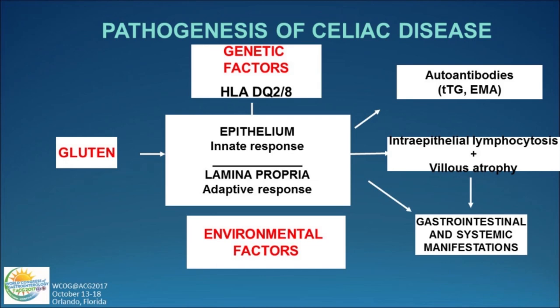Celiac disease occurs in about 1% of the population, and the most recent figures show that in the United States at least half of that 1% are now diagnosed. I think that reflects the great increase in education about the disease amongst medical personnel.